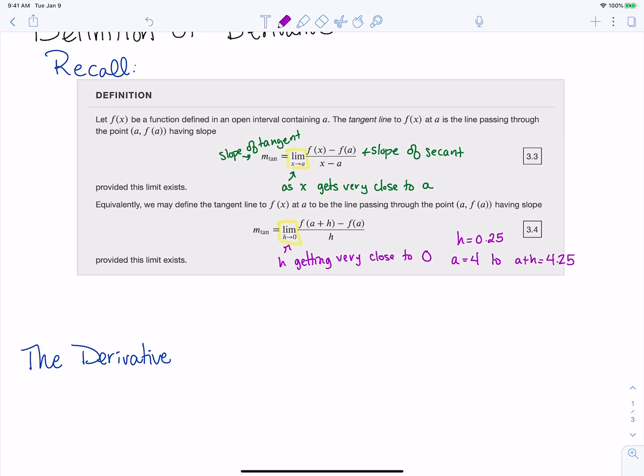The derivative is the slope of the tangent line of our function f(x) at x equals a. This is just one definition. There are different ways we can talk about what the derivative is and different ways to interpret that, which we'll look at throughout the term. Right now we're going from that tangent line to talk about it more generally as the derivative.